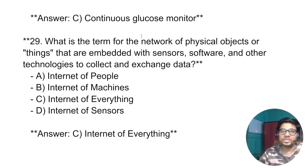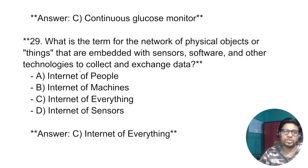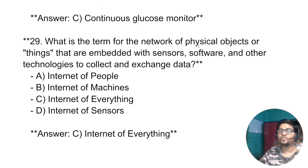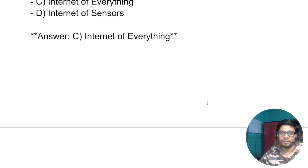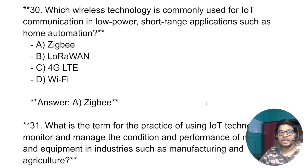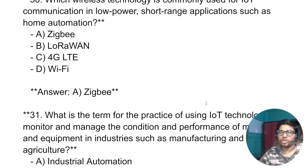What is the term for a network of physical objects or things that are embedded with sensors, software, and other technology to collect and exchange data? The answer is: Internet of Everything.